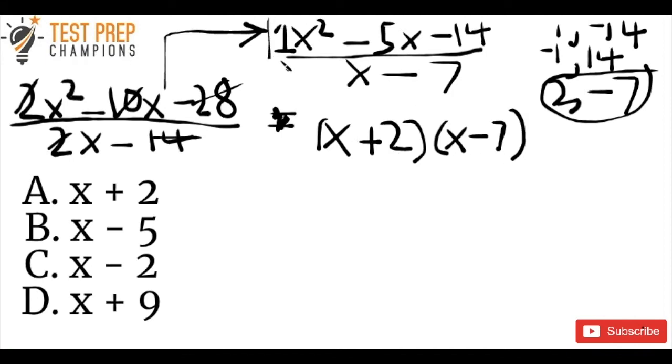So this whole top part of the equation up here, 1x squared minus 5x minus 14, that's equal to x plus 2 and x minus 7. So now we've got x minus 7 down here still in our denominator. And the really cool thing is that we can, we see that we've got x minus 7 up top and x minus 7 down bottom. So we can cancel those out and we're just left with x plus 2.